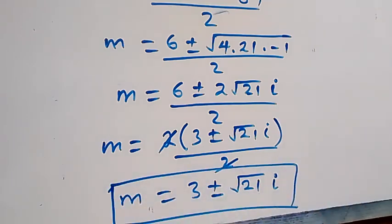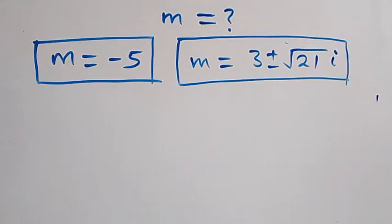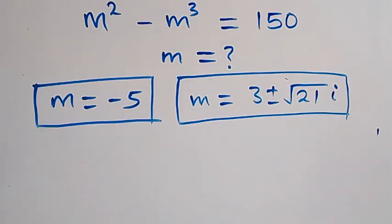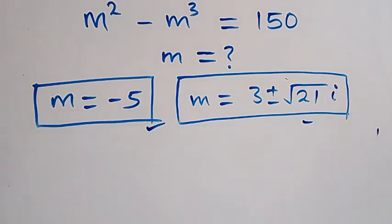We have two complex solutions. Altogether we have three solutions to this problem: one real solution m equals negative 5, and two complex solutions m equals 3 plus or minus i√21. Thank you for watching — don't forget to subscribe for more videos, turn on the notification bell, share this video, give a thumbs up. See you next class, bye for now.